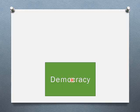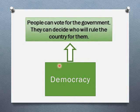Now the question arises: what is the meaning of democracy? In a democratic country, people can vote for a government — they can decide who will rule the country. The citizens are free to vote for their government. This is how democracy works.